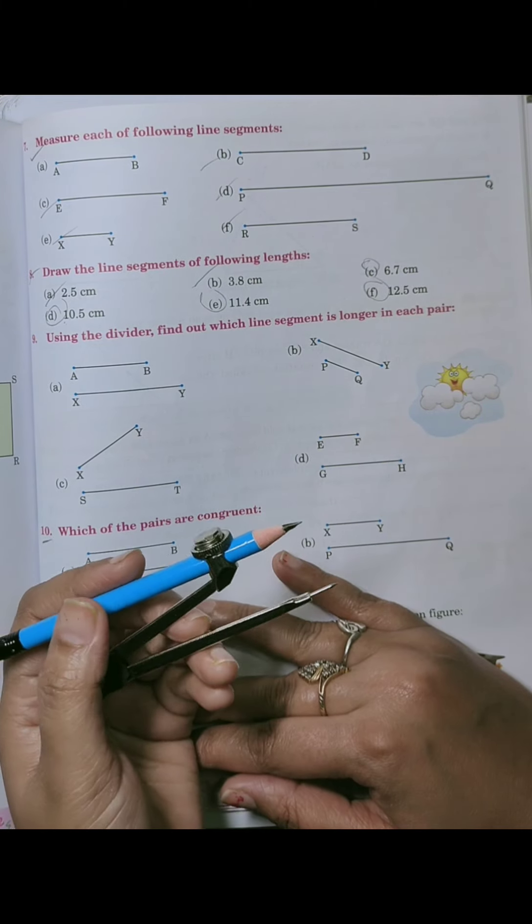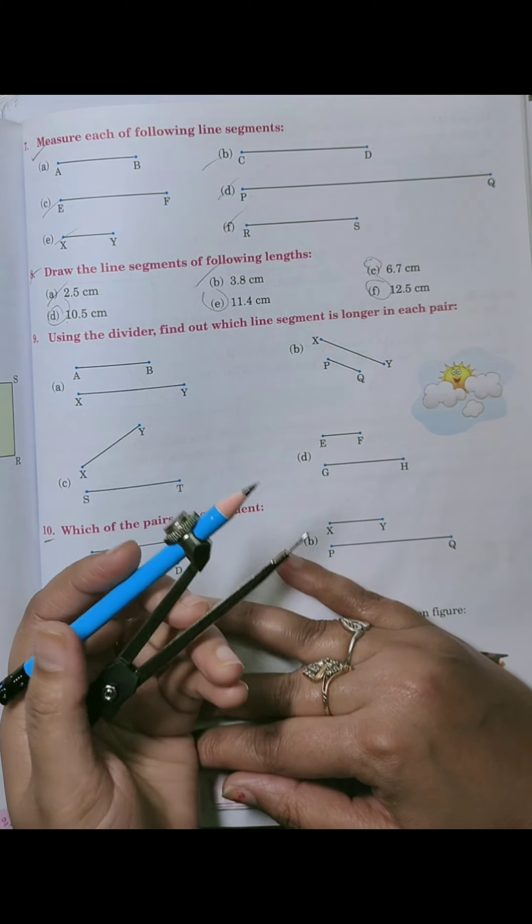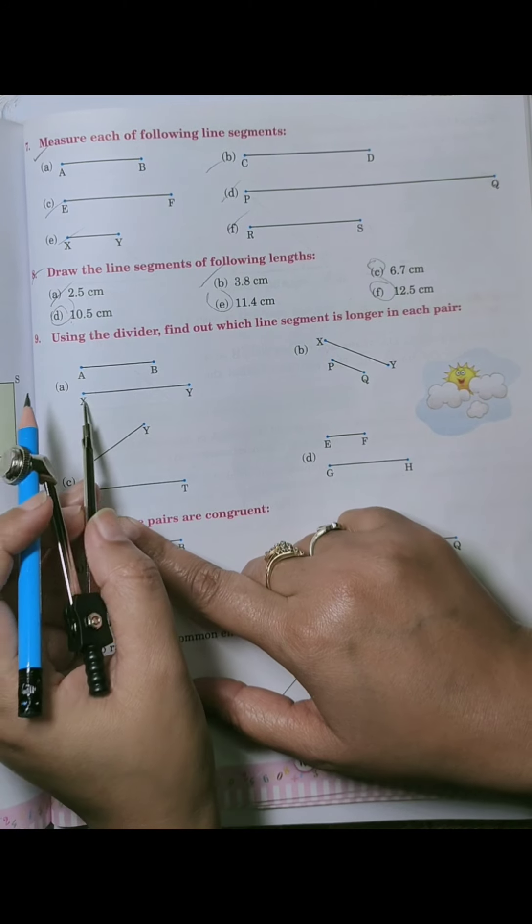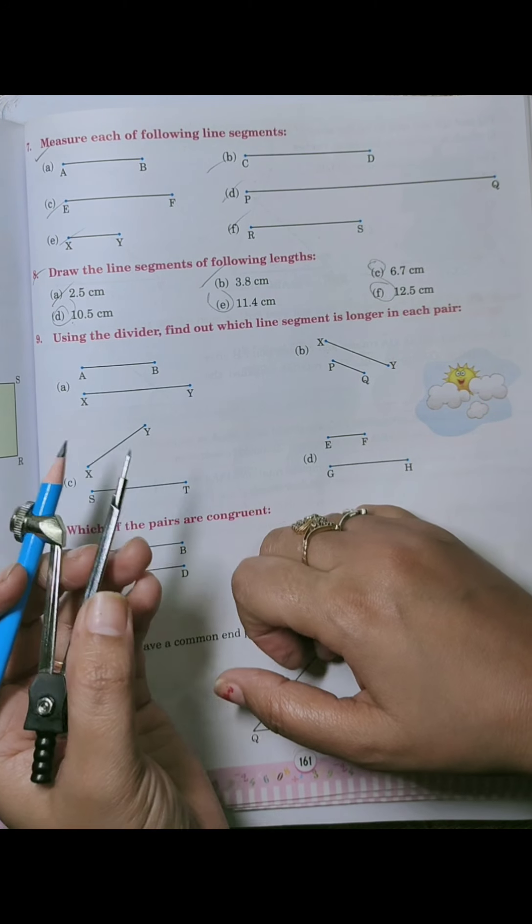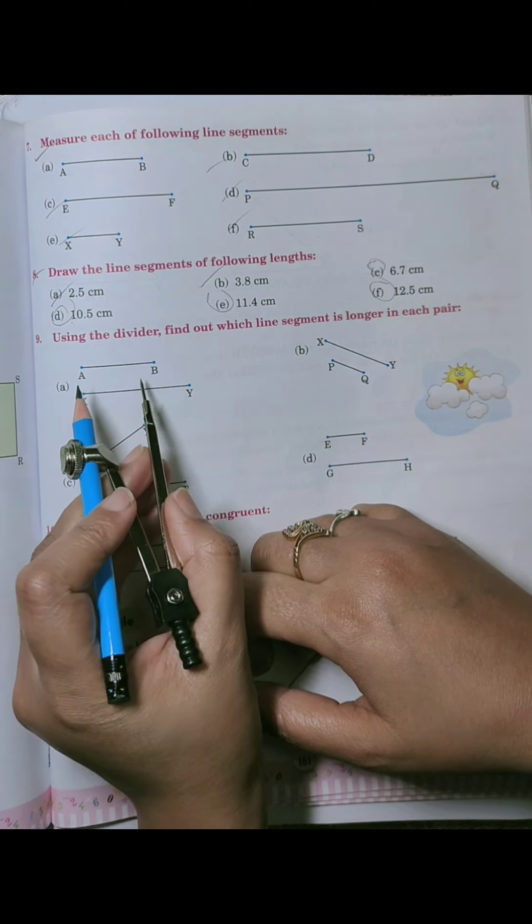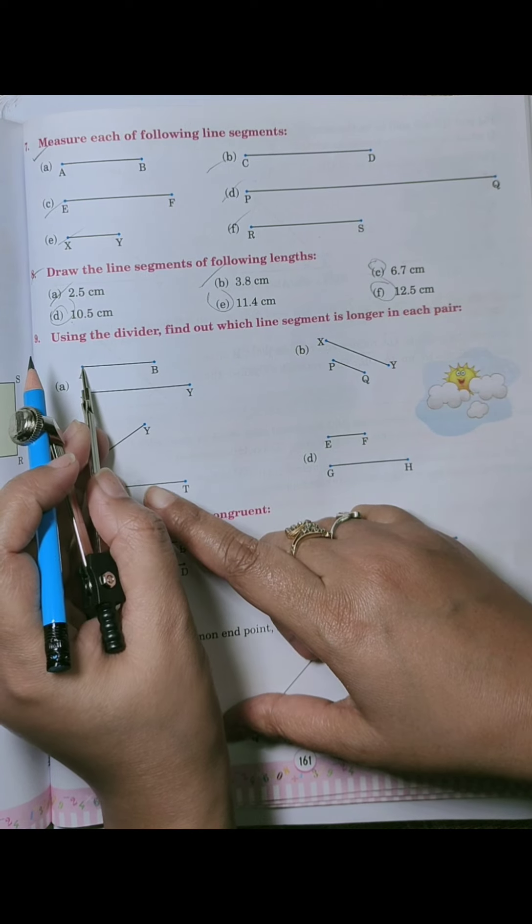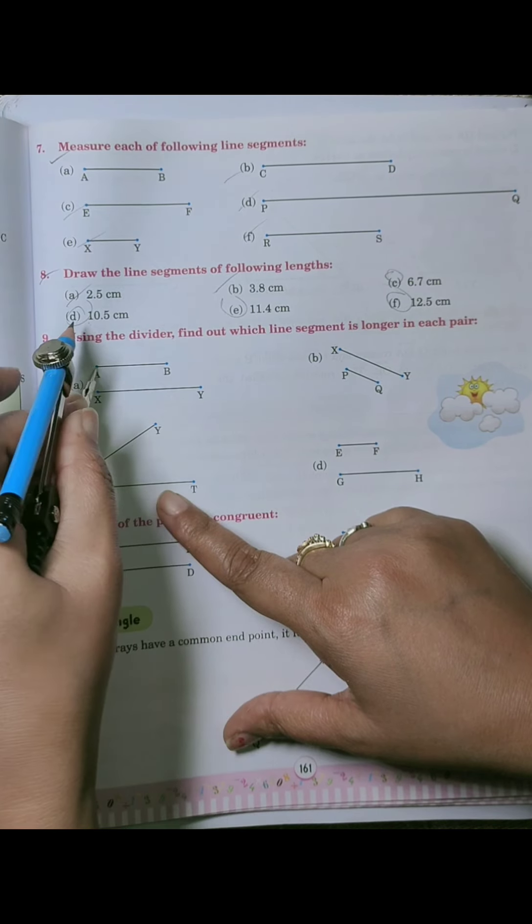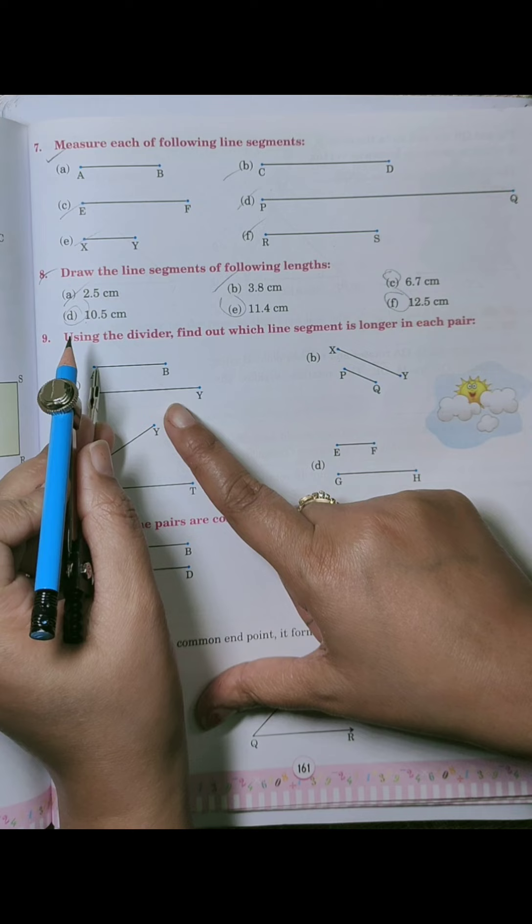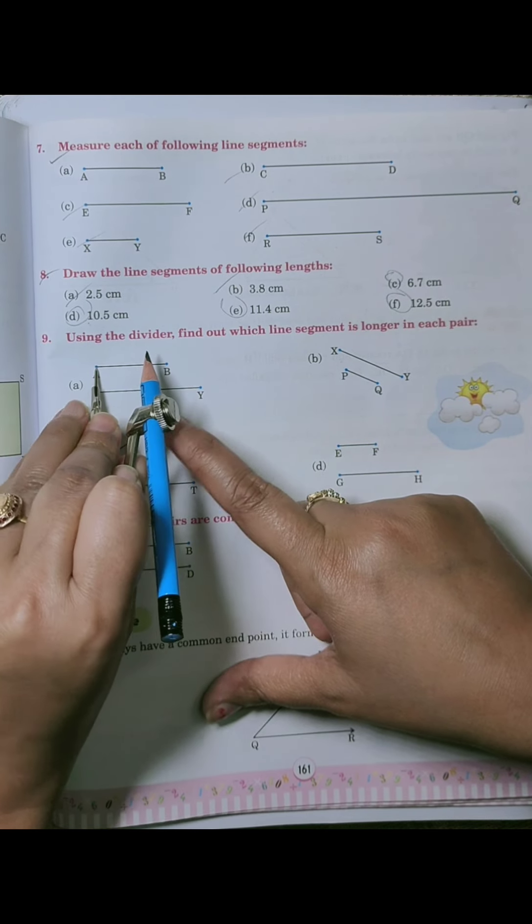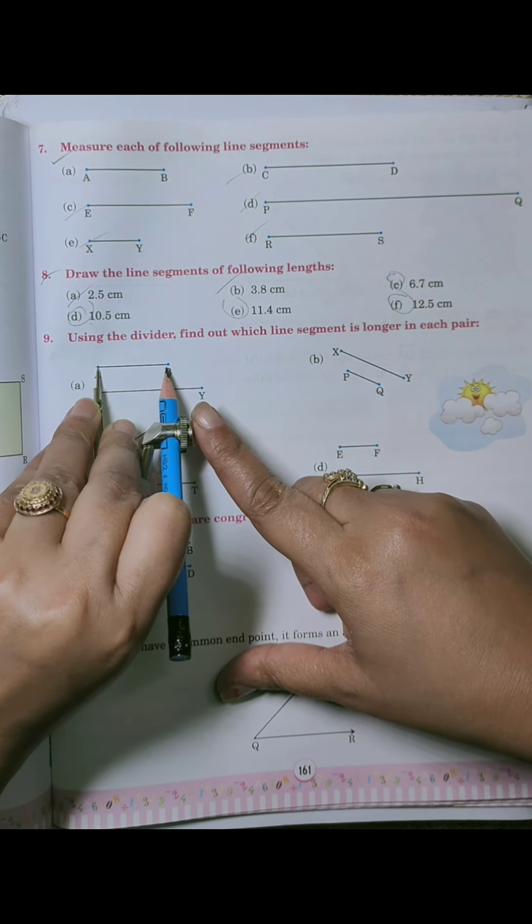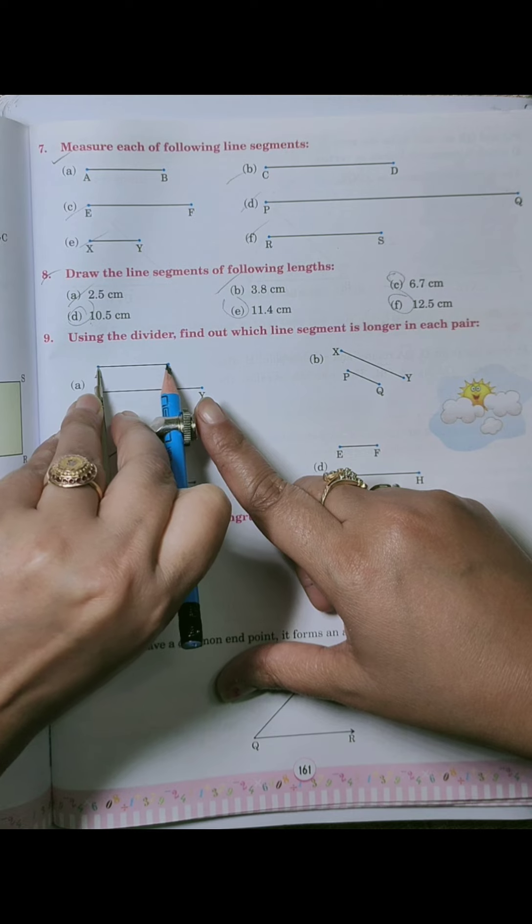So students, we should have a compass like this and we will measure AB line segment with the help of divider. We will measure by keeping it on one point and keeping the tip on the second point.